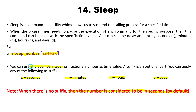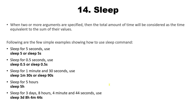We can use any positive integer or fractional number as the time value. When providing two or more arguments with the sleep command, the total amount of time is the sum of their values. For example, sleep 1m 30s means the total time is equivalent to 60 plus 30, which equals 90 seconds.